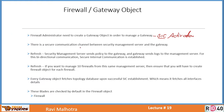There is a secure internal communication channel between the security management server and the Gateway. Any communication happening between the security management server and Gateway happens over an SSL channel. The communication is bi-directional in nature: the security management server sends policies to the Gateway, and the Gateway sends logs back to the management server. If you want to manage 10 firewalls from the same management server, you must create a firewall object for each firewall — you cannot manage all Gateways with just one object.